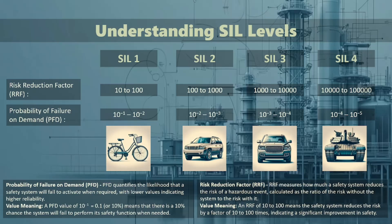SIL 3 is your high-end SUV, equipped with advanced safety features. It offers an RRF of 1,000 to 10,000, reducing risk by up to 99.99%. SIL 4 is the armored tank of safety levels, providing the highest safety with an RRF of 10,000 to 100,000, reducing risk by up to 99.999%. However, it's rarely used in practice due to its complexity and cost.